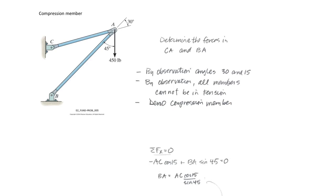Drawing the angles given in the picture: there's a 45-degree angle and a 30-degree angle. Using parallel line geometry, if this angle is 30 degrees then the corresponding alternate interior angle is also 30 degrees. Since the whole angle sums to 90 degrees, this leaves 15 degrees for the remaining angle. Most of this geometry can be done by observation without any arithmetic.